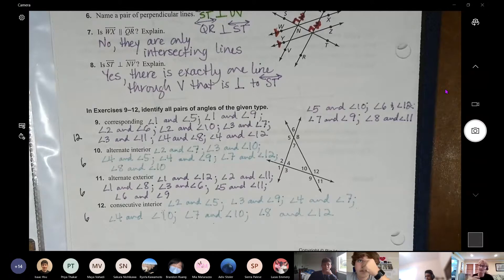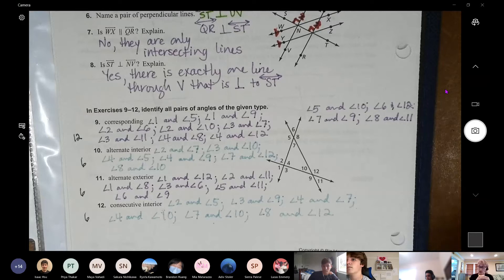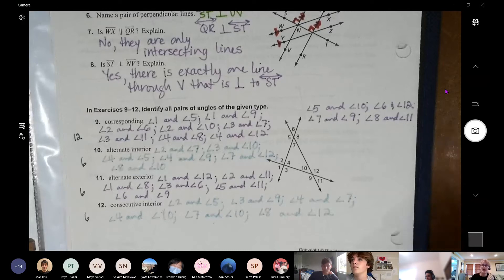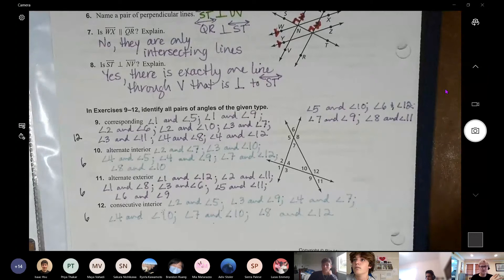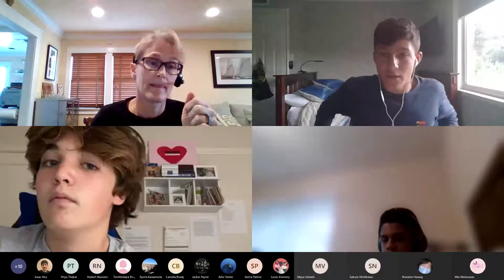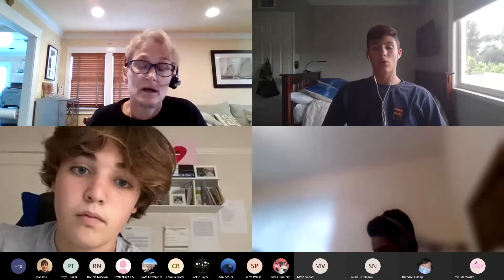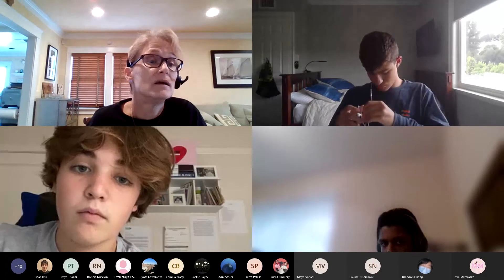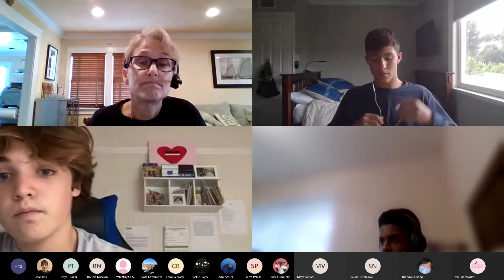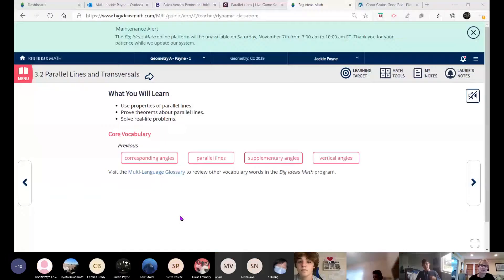So section one was all identification. Like this is what they are and recognize it. Section two, we're actually going to do theorems. So I'm going to go straight over to theorem two, section two. I'm going to be showing you some examples. And I think there's five. If you have a question, pop your hand up or unmute yourself as we're going. Or if you want to follow along, this is on Big Ideas.